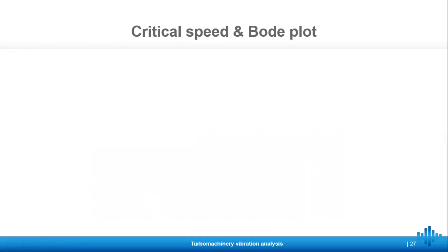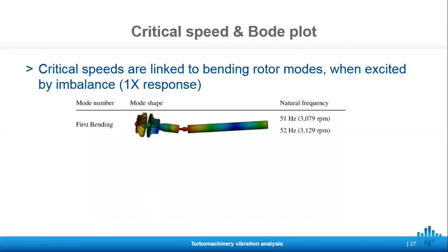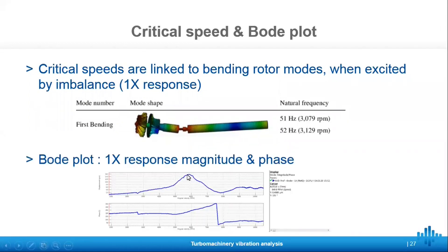Now let's take a look at the Bode plot. The 1x is a response to imbalance, and when this imbalance excites the first bending mode of the shaft, we will have a resonance. This resonance will be transduced by a critical speed during a run-up. For example here, we have a natural frequency very close to 50 Hz — it's the first bending mode, as you can see by the mode shape. The Bode plot shows both the magnitude and the phase, so we can check if the phase is rotating and if at the same time we see a resonance, meaning we have a critical speed linked to a bending mode.